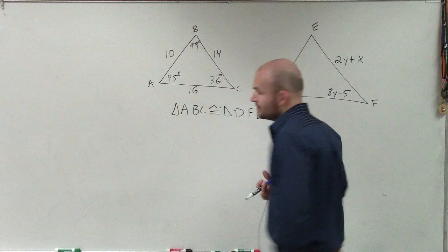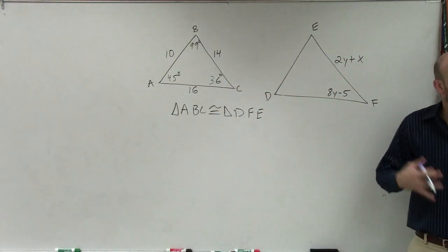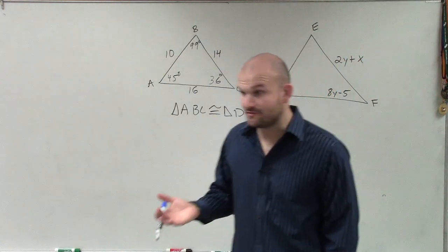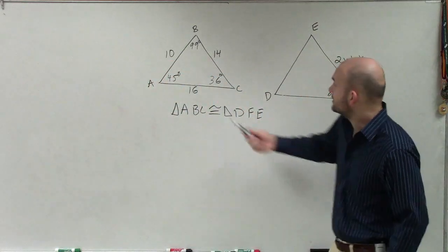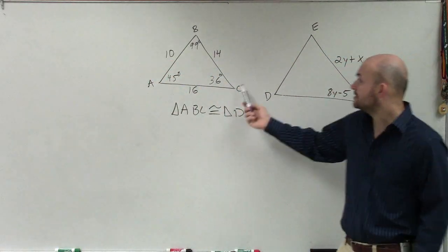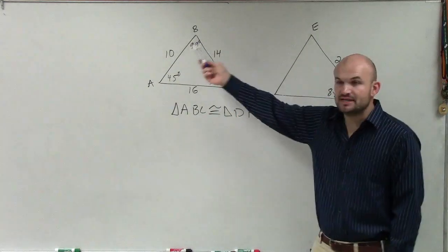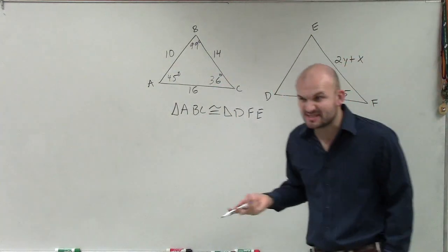So a lot of times, we're going to look and we might assume that different parts of the triangle are going to be equal to different parts of the triangle. To me, obviously, this looks like A is congruent to D, C is congruent to F, and B is congruent to E. It kind of makes sense. It looks like it.